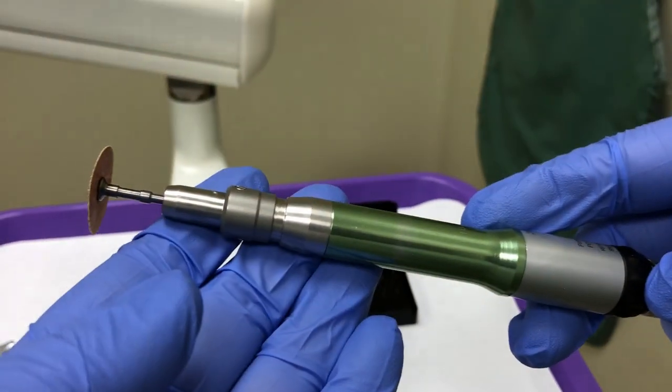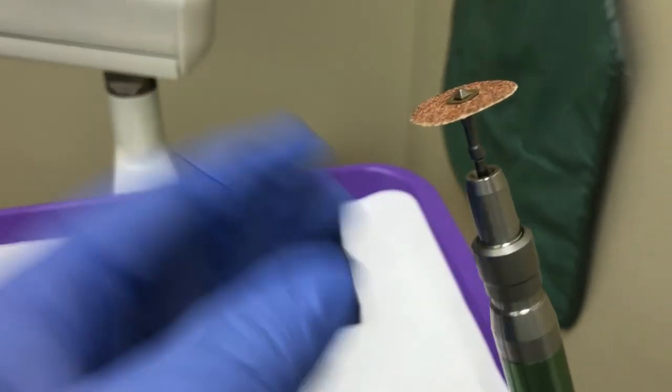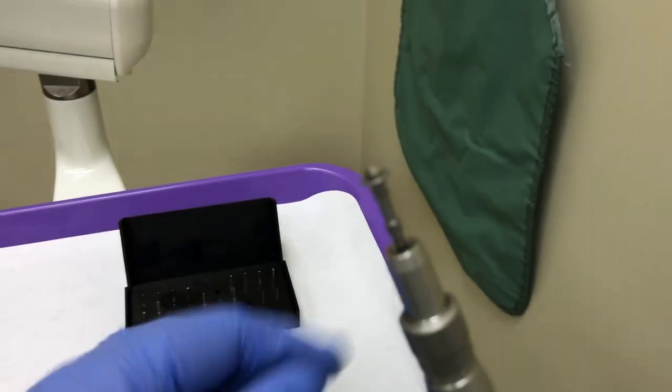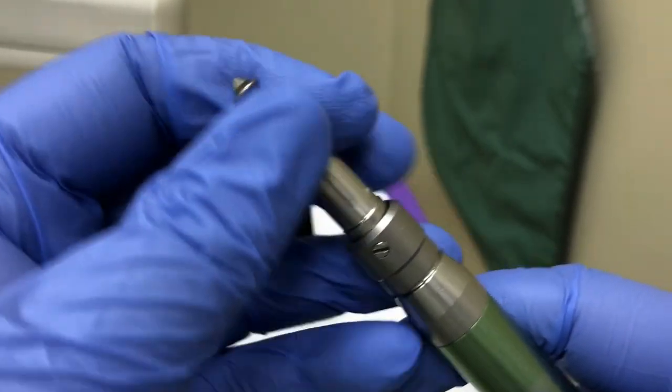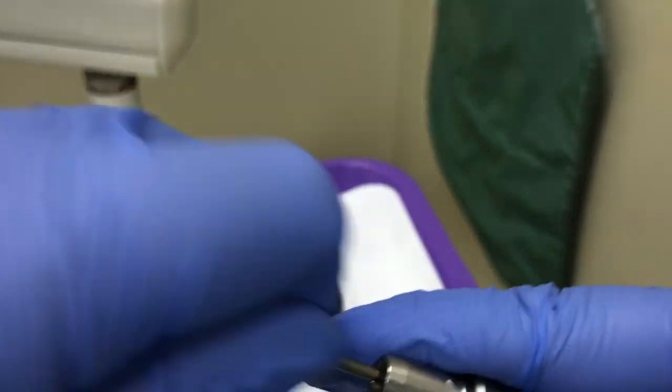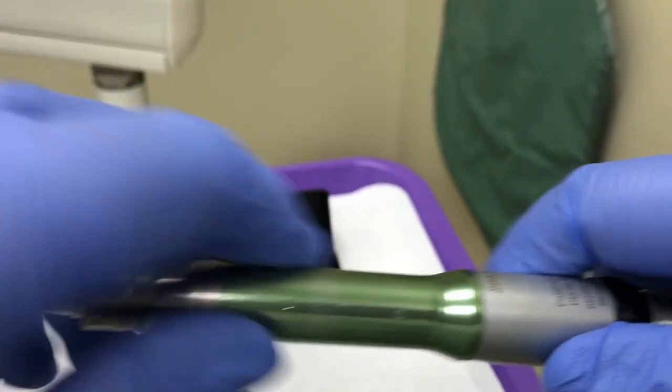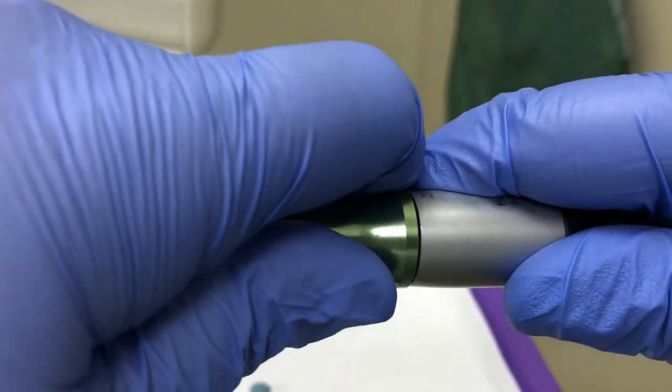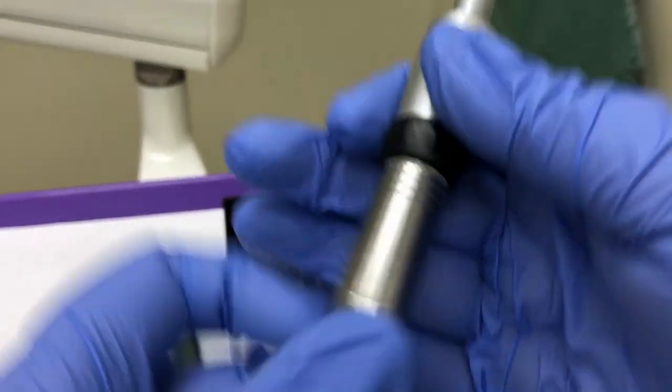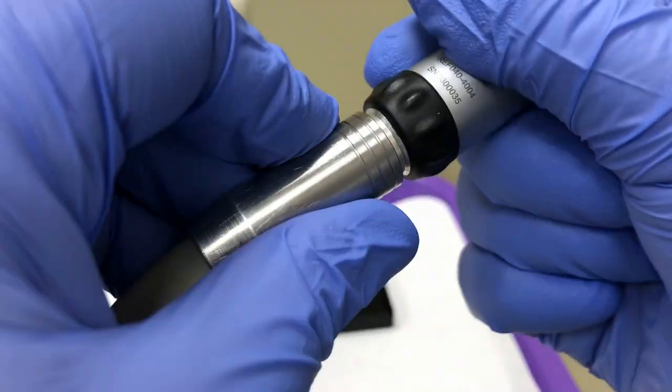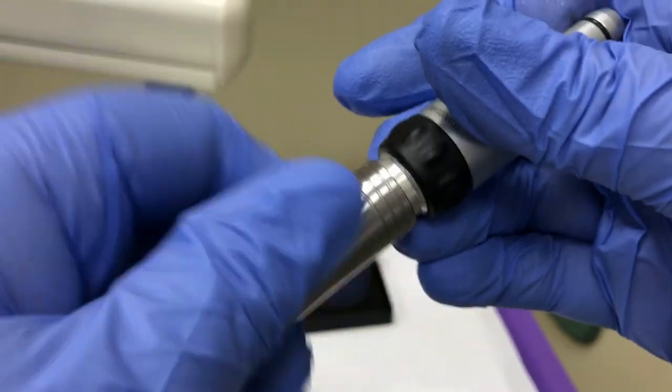To disassemble, remove the disc, unlock the straight attachment, remove the mandrel, and pull the straight attachment off the motor. Unscrew the coupler to remove the handpiece.